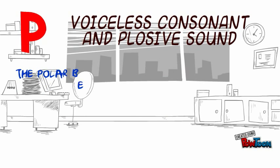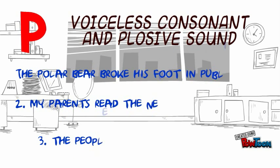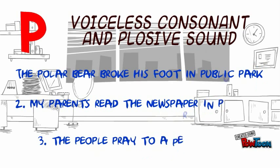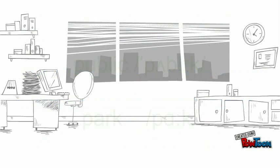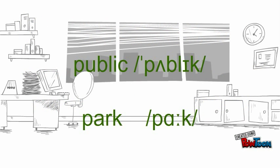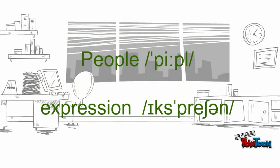P is a voiceless consonant and stop sound. Examples: public, park, parents, newspaper, place, people, expression.